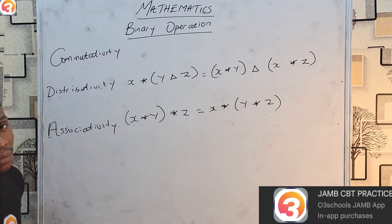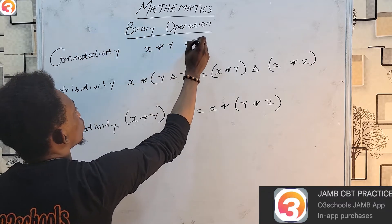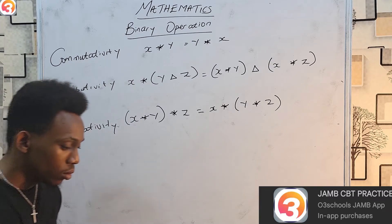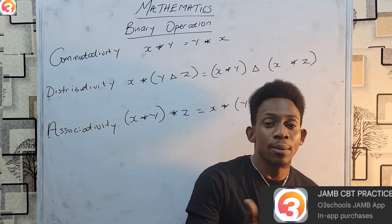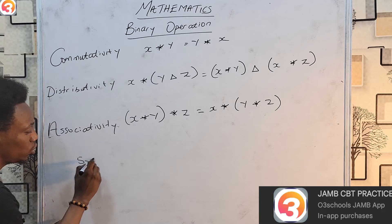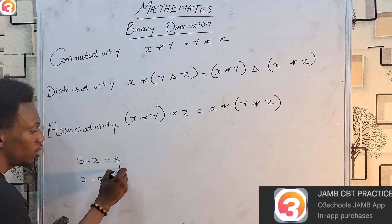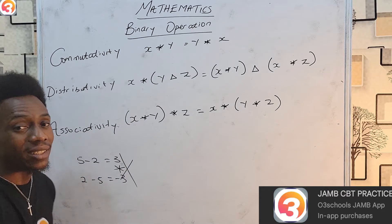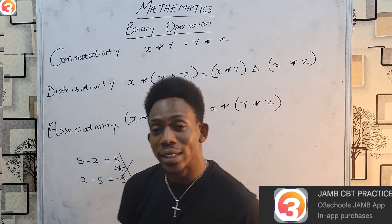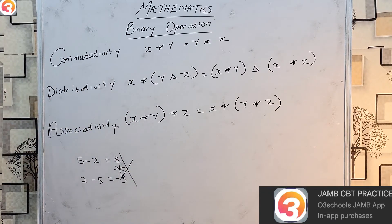For commutativity — this is actually the easiest one — it simply means that if x★y equals y★x, then that operation is commutative. For example, 5 × 2 = 10 and 2 × 5 = 10, so multiplication is commutative. But 5 − 2 = 3 and 2 − 5 = −3, not the same, therefore subtraction is not commutative. The test for commutativity is simply: try it one way, then switch the numbers and see if you get the same answer.